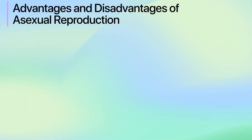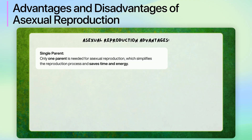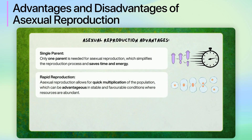Now let's look at the advantages and disadvantages of asexual reproduction. Starting with the advantages, only one parent is needed for asexual reproduction, which simplifies the reproduction process and saves time and energy. Furthermore, asexual reproduction allows for quick multiplication of the population, which can be advantageous in stable and favourable conditions where resources are abundant.